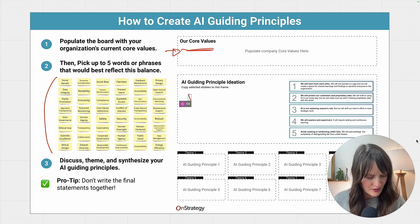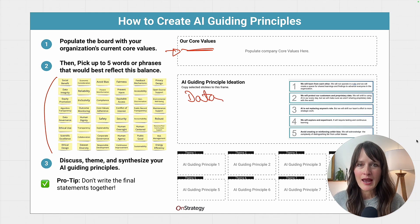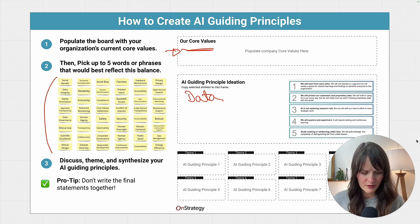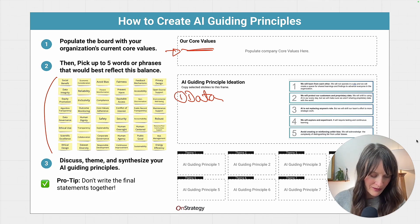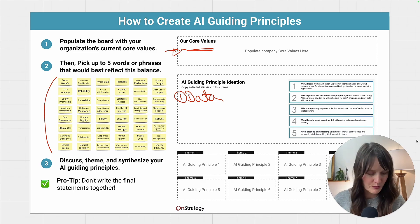I might just make a couple of recommendations. You probably should have a guiding principle around data — how data is used and where data can be used using open source AI or not, as the case may be. That's very important, so that would be one topic you should definitely have a guiding principle around.